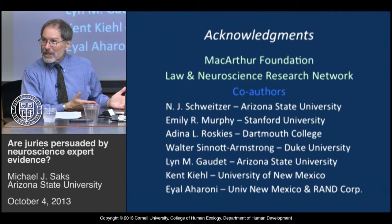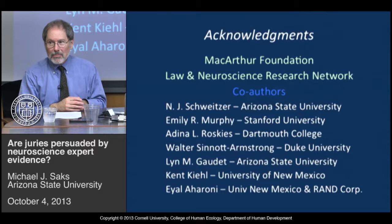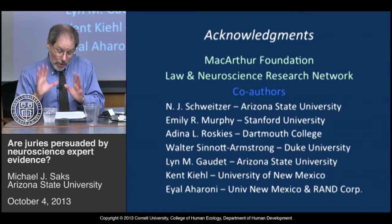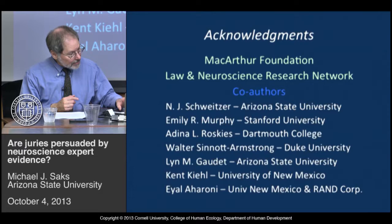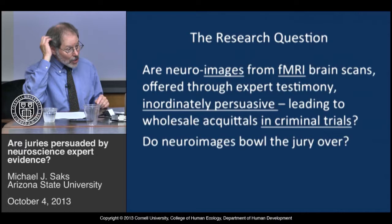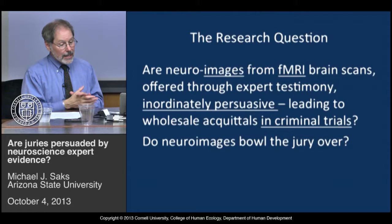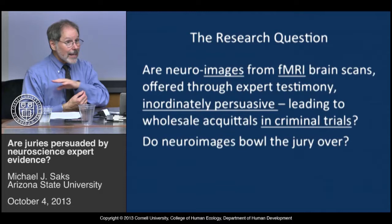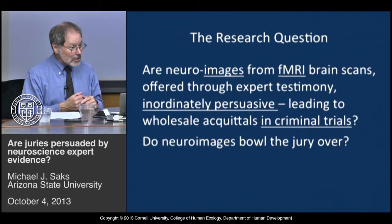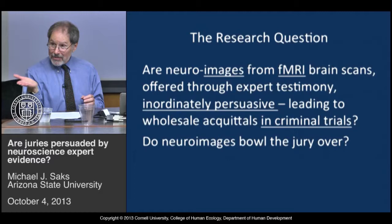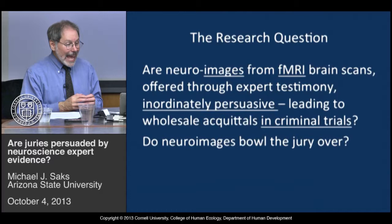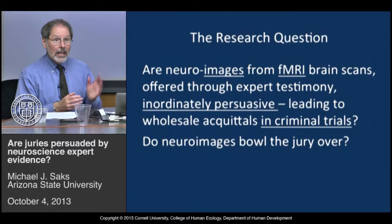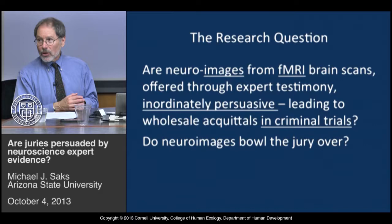If a juror didn't understand the information before but now sees the picture and gets it, that's a very tricky problem. The core research question—underlined because other studies didn't quite look at this—is: if what the MacArthur network cared about most was neuroimages from fMRI brain scans, offered through expert testimony, are they inordinately persuasive? And does that lead to wholesale acquittals in criminal trials? Putting it briefly: do neuroimages bowl the jury over or not?